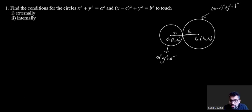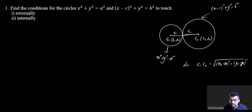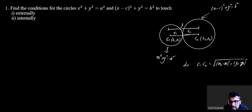Now, the distance between the two centers C1 and C2 is given by the distance formula: d equals the square root of (x2 minus x1) squared plus (y2 minus y1) squared, where (x1, y1) and (x2, y2) are the coordinates of C1 and C2 respectively.